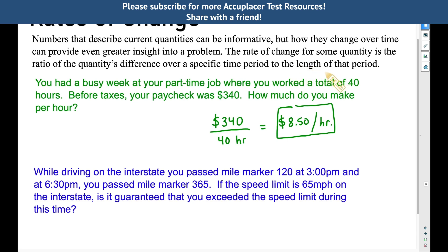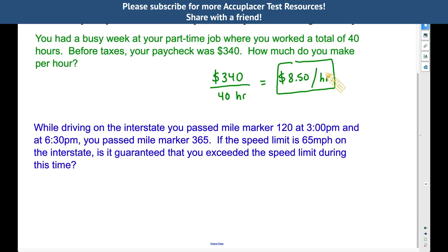Look right here. The rate of change for some quantity is the ratio of the quantity's difference over a specific time period to the length of that period. What does this mean? Well, notice we didn't travel 365 miles during this time period. At 3 o'clock we passed mile marker 120. At 6:30 we passed mile marker 365. Let's find how many miles we traveled. To do that we're going to find the difference between these two numbers. I'm going to put this in my numerator because this is a quantity based on miles per and in our denominator we'll put our time down there.